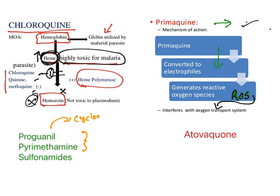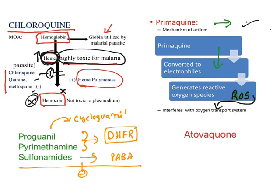Proguanil is a prodrug which is converted to cycloguanil. Both cycloguanil and pyrimethamine inhibit dihydrofolate reductase of Plasmodium — they are selective towards Plasmodium and not human beings. They interfere with folic acid synthesis. Sulfonamides are structural analogs of para-aminobenzoic acid. All three of these drugs inhibit folate formation and are known as antifolates.